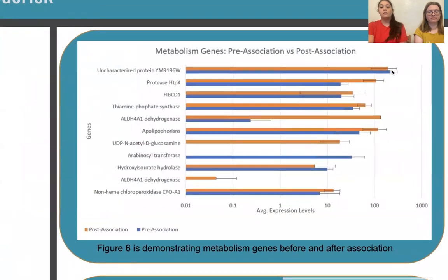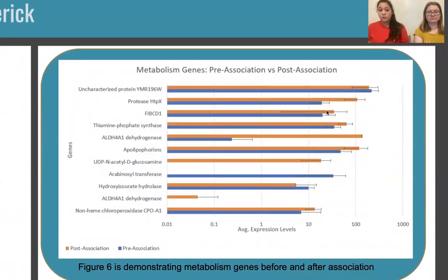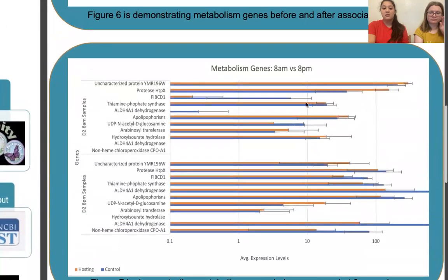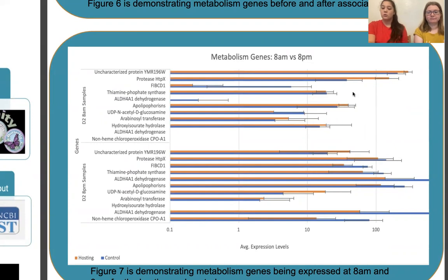Looking at the metabolism gene graphs, once again our hosting anemones in orange show much higher upregulation of metabolism genes. This coincides with the idea that the clownfish is providing many nutrients and extracellular products to the sea anemone, so the sea anemone has to upregulate metabolism in order to break down and make use of them. At 8am, hosting anemones show higher upregulation of metabolism genes than at 8pm, which mirrors the sea anemone's circadian activity — they're more active at night to avoid predators, explaining why the control group is higher at 8pm. Clownfish are active during the day, so the sea anemone must actively metabolize extracellular products at 8am post-association with clownfish.